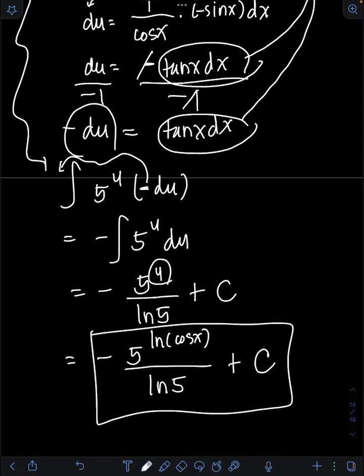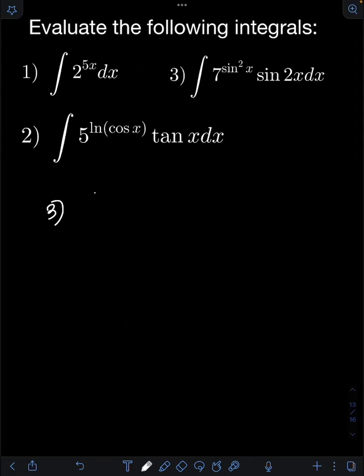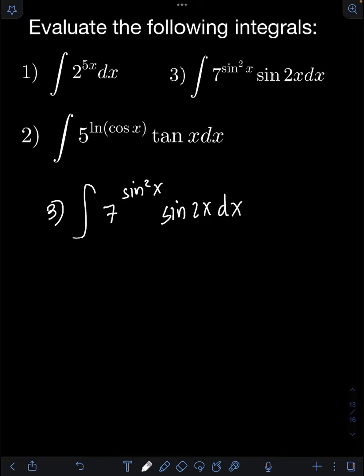For number 3, we have the integral of 7 raised to sin squared x times sin 2x dx. Applying u-substitution, we let u equal the exponent of 7, which is sin squared x.